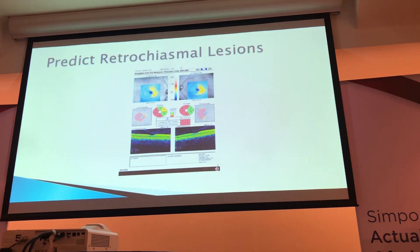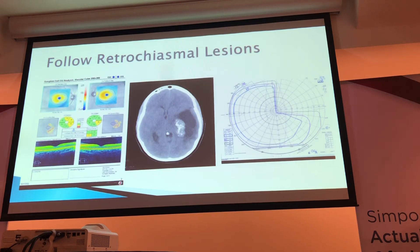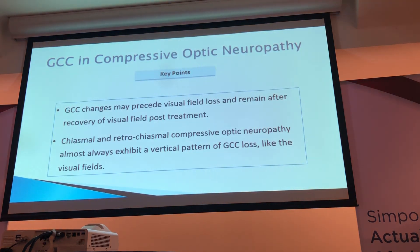For retrochiasmal lesions, the ganglion cell complex can match those lesions as well — such as in someone with a homonymous hemianopia or a quadrantanopia — and you can see the associated ganglion cell complex loss. Key points for compressive optic neuropathy: GCC changes may precede visual field loss and remain after recovery of visual field post-treatment. This is an opportunity to intervene prior to onset of visual field loss. Chiasmal and retrochiasmal compressive lesions almost always exhibit a vertical pattern of ganglion cell loss, similar to the visual fields.